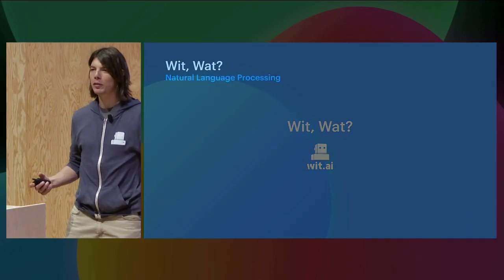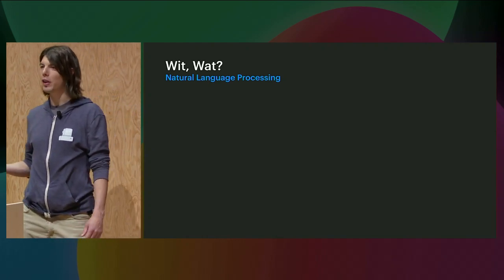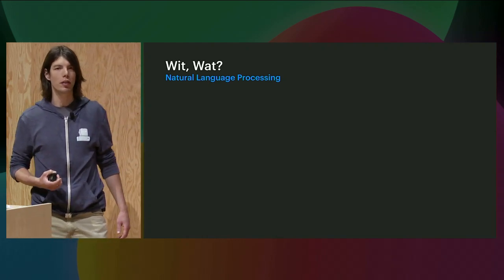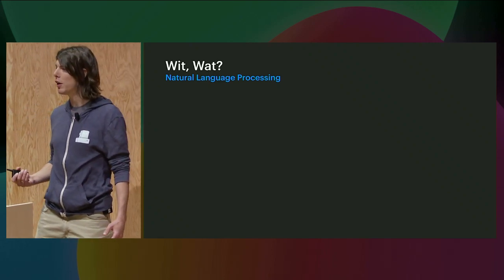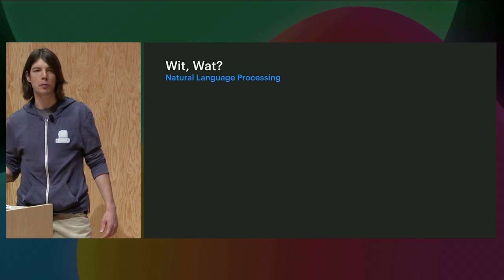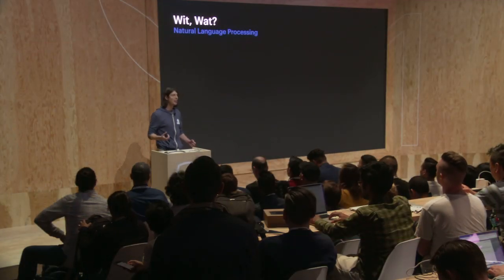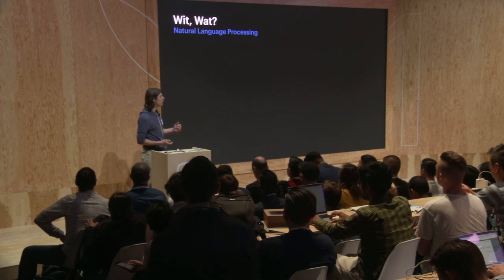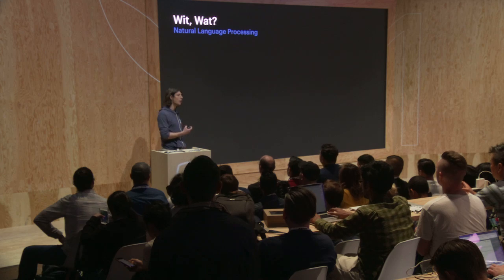So first, what is WIT? Before understanding what WIT is, you first need to understand what natural language processing is. Natural language processing, NLP, or natural language understanding, NLU, is a set of artificial intelligence, AI, techniques that deal with the interactions between humans and machines. In particular, NLP is helpful to extract useful information out of raw inputs, such as speech or text.